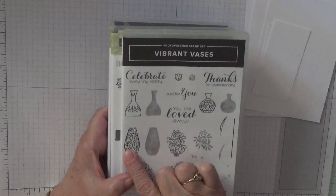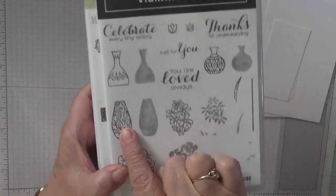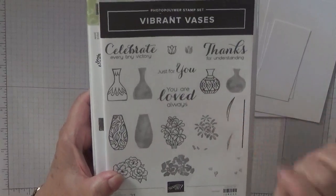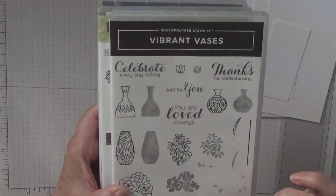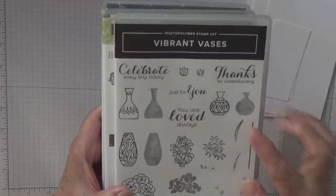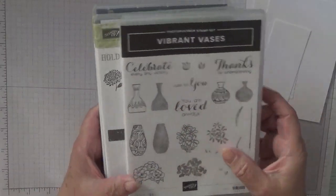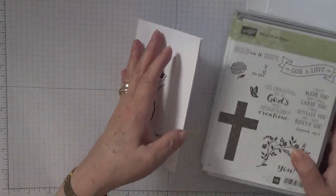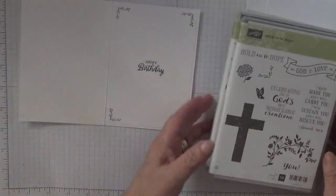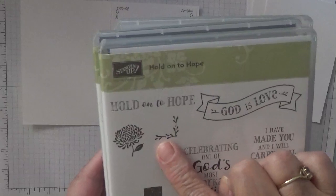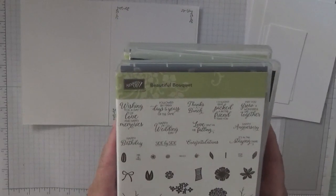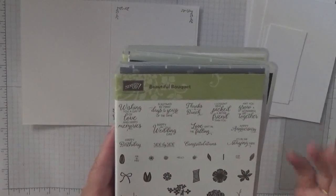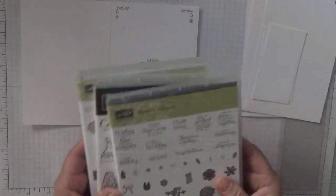The stamp sets I'm using are Vibrant Vases. I'm going to use this vase, this leaf and this tulip, and the sentiment on the front is going to be just for you. Inside I have put this little corner leaf thing from Hold On To Hope and birthday bouquet I use the Happy Birthday.